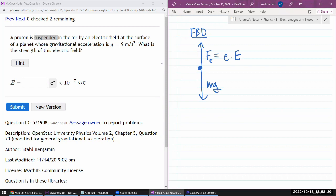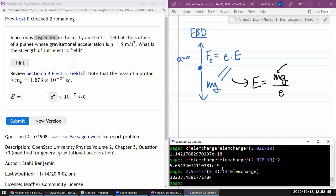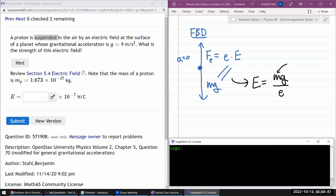Okay, so since acceleration is zero, we can say these two must be equal to each other. Solving for electric field from that, that's mg divided by E. And here, this m is the proton mass. I hope I'm given that here. There it is. Proton mass. So I'm just going to use that.